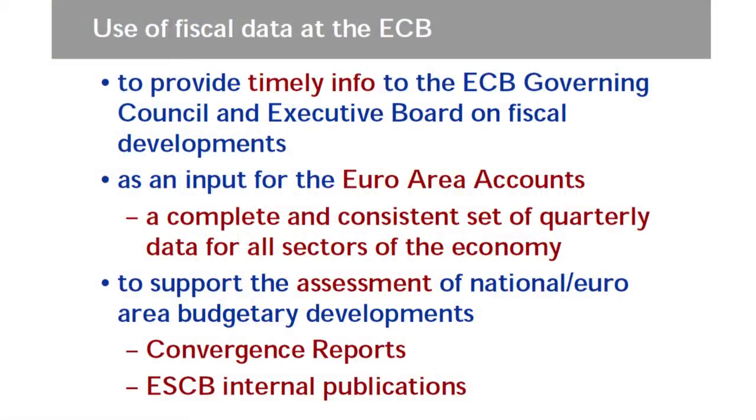What we do in the Government Finance Statistics Unit is use fiscal data to provide timely information to our decision-making bodies — the Governing Council and the Executive Board — so that they are up to date on fiscal developments in the member states. We also use fiscal data as an input for colleagues who compile the so-called Euro area accounts, which is a complete and consistent set of quarterly data for all sectors of the economy. These statistics are compiled together with colleagues at Eurostat and basically show how the different sectors of the economy interact, and we try to prepare them on time for our Governing Council deliberations.